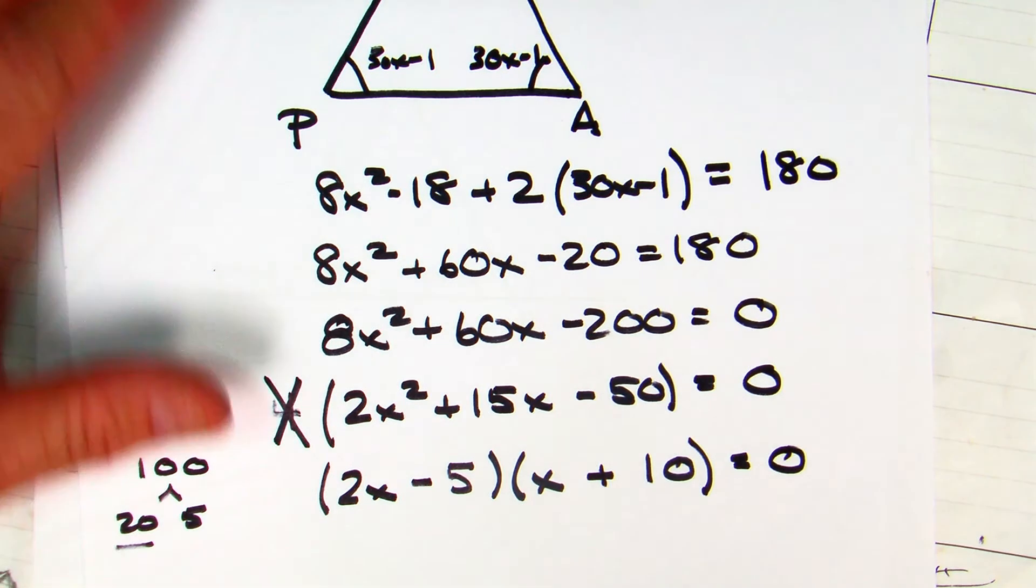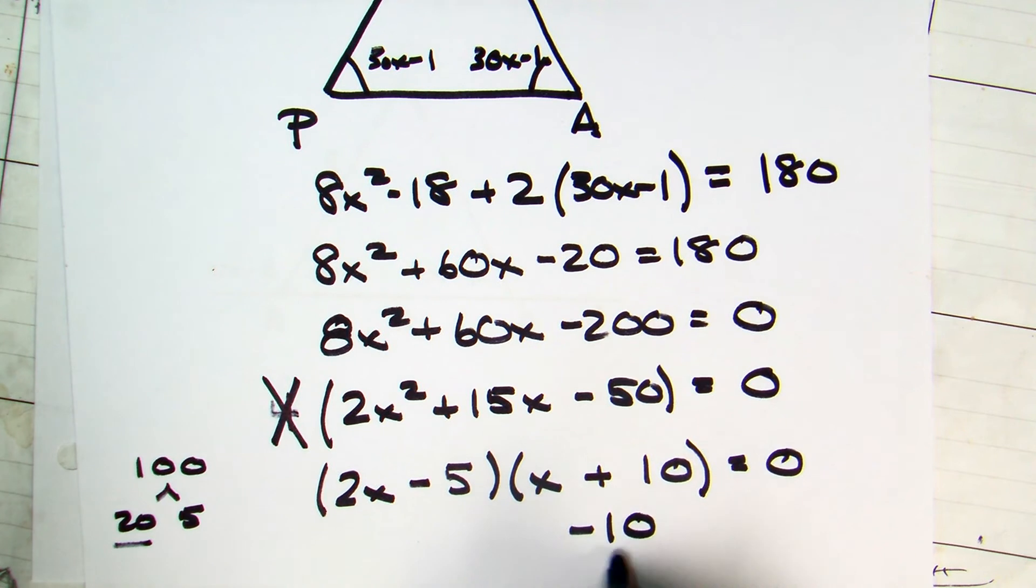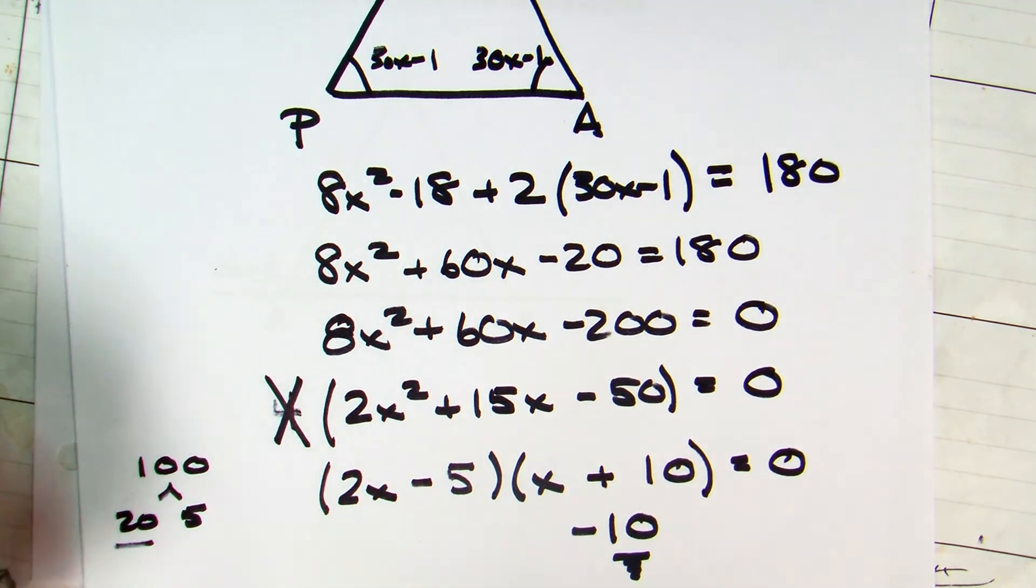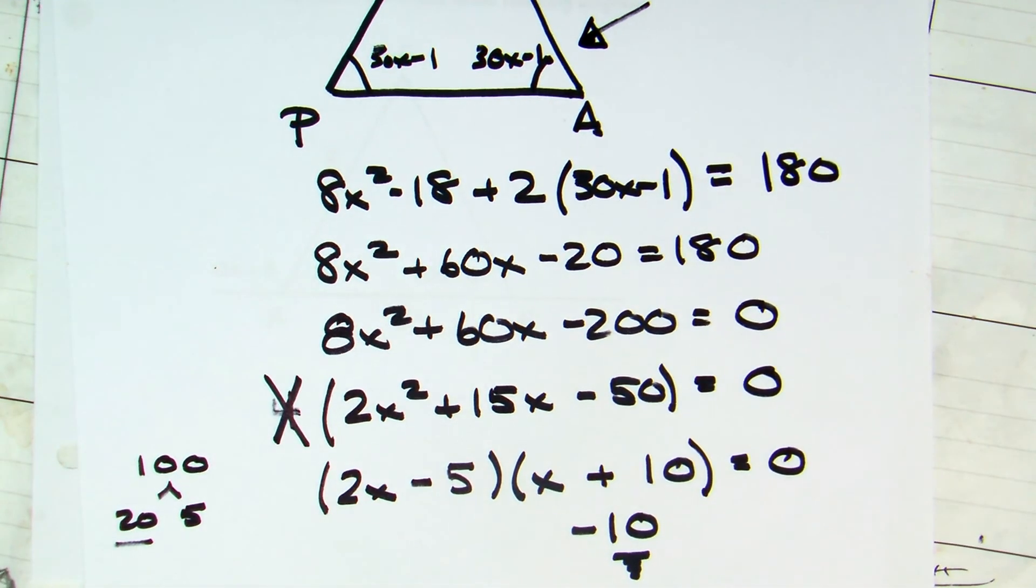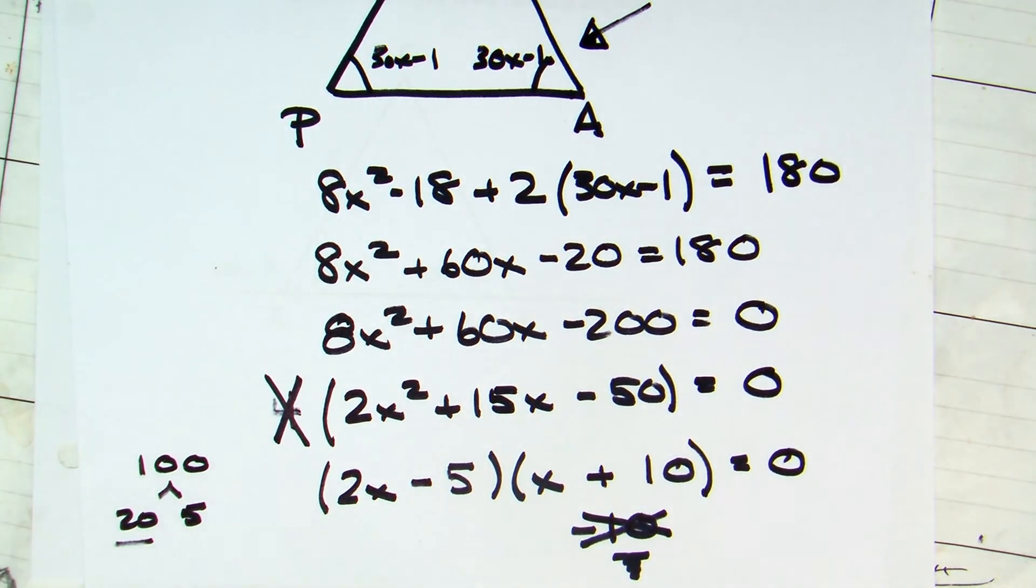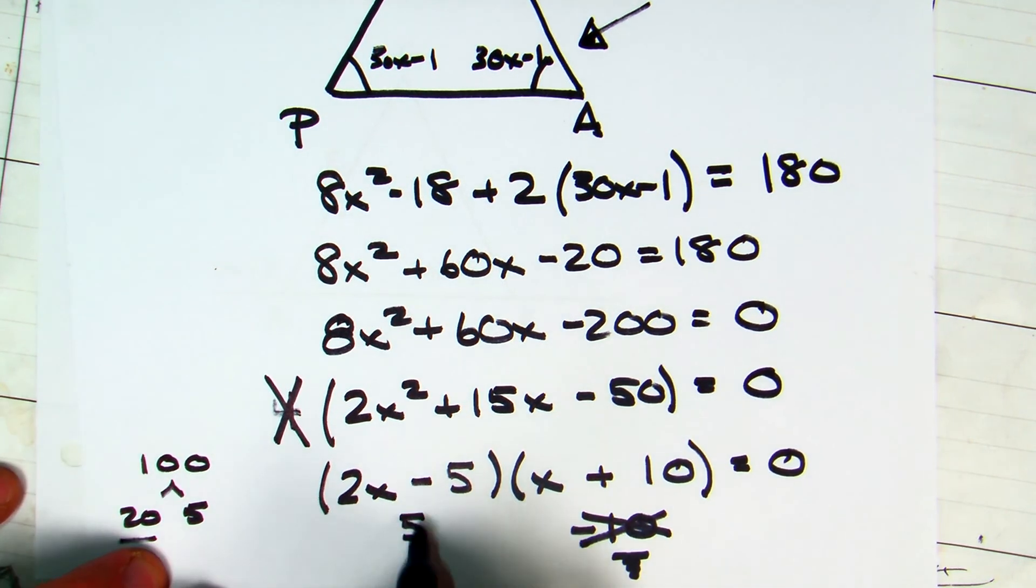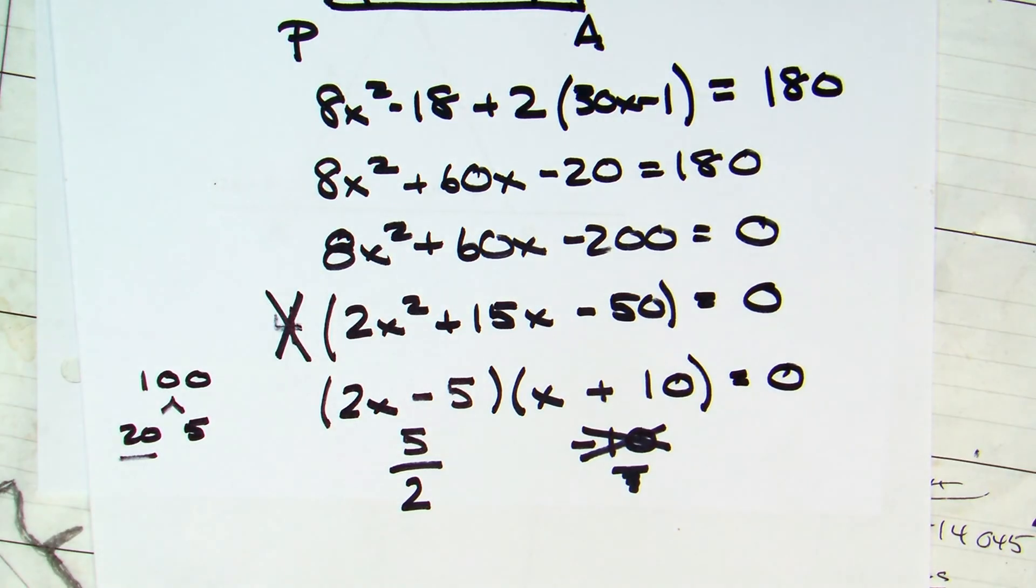You factor any way you learned in Algebra 1. If you need help, feel free to swing by. But either way, you should come up with 2x minus 5 and x plus 10. What's the opposite of positive 10? Which means one of my algebraic solutions would be negative 10. What happens when I plug in negative 10 back into my base angle? Negative. Can I have a negative angle measure? Not right now. So negative 10 is extraneous. That leaves me with the opposite of negative 5, which is 5 divided by 2.